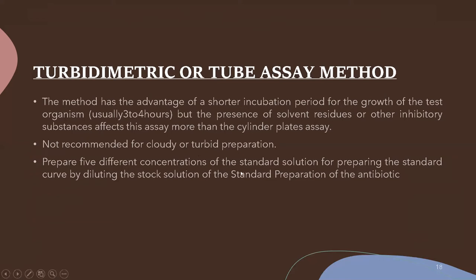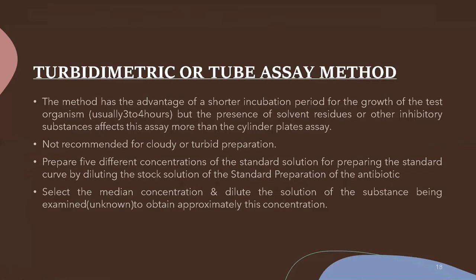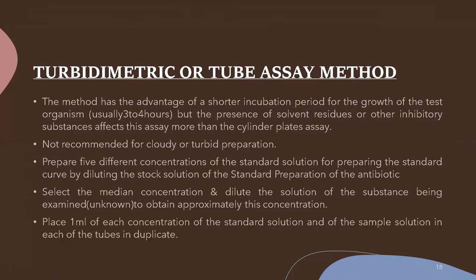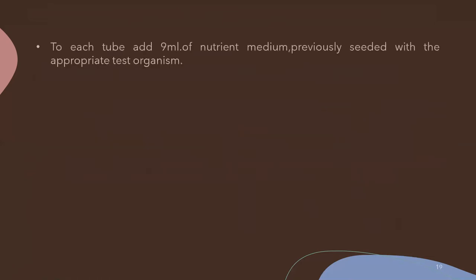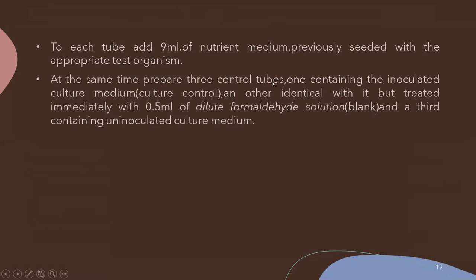For the turbidimetric method, prepare five different concentrations of the standard solution by diluting from the stock solution. Select the median concentration and prepare the unknown solution considering the median concentration. Then place 1 ml of each standard solution and test solution into test tubes. Add 9 ml of nutrient medium previously seeded with the test microorganism into each test tube. Prepare three control tubes: one with uninoculated culture medium, one with inoculated culture medium as a culture control, and a third with inoculated culture medium plus 0.5 ml of dilute formaldehyde solution as a blank.